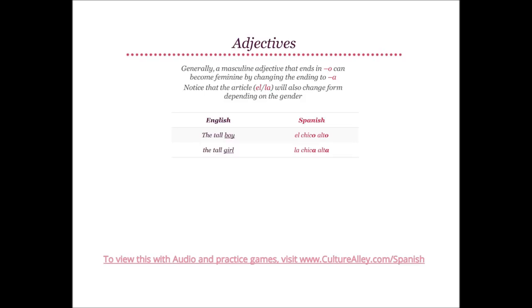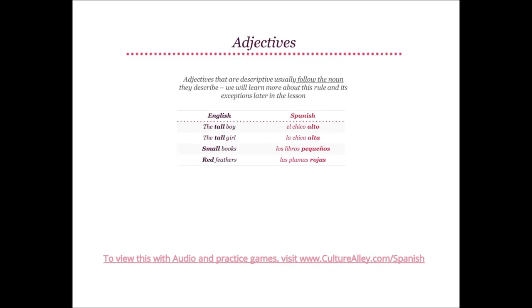Notice that the article el or la will also change form depending on the gender. The tall boy translates to el chico alto — both adjective and noun end in O, and the article used is el. The tall girl will be la chica alta — both adjective and noun end in A, and the article used is la. Adjectives that are descriptive usually follow the noun they describe. The tall boy is el chico alto; alto comes after chico. The tall girl is la chica alta; alta comes after chica.